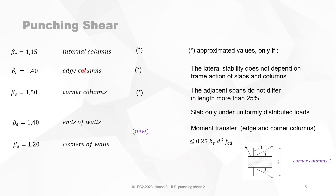Concerning edge and corner columns, the moment transfer must be smaller than the value mentioned in the formula. There is a small drawing for this condition, but it is only for an edge column. It is not very clear how this formula must be interpreted for corner columns, even though it states it is applicable for edge and corner columns.